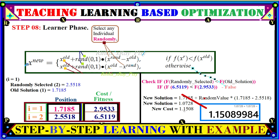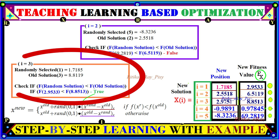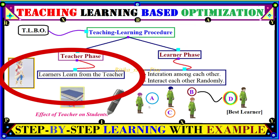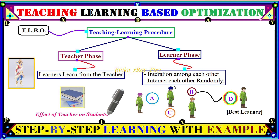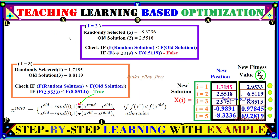The new cost is computed using the sphere function by substituting the new solution value. Like that, we do this for all learners. For the second one, we compute similarly. For the third one, the condition is true so we move to that branch. As learners can interact with each other and also move randomly, we compute the new solution for each learner in the learner phase.